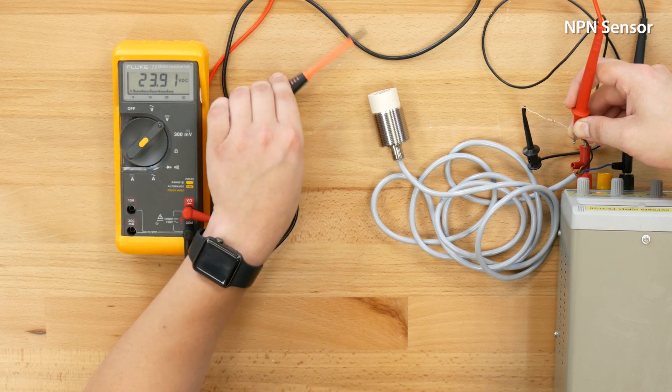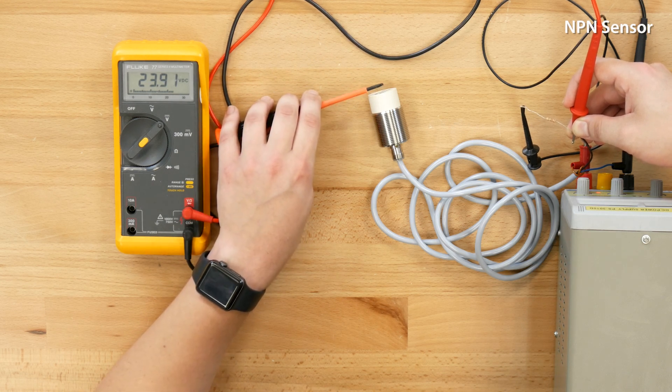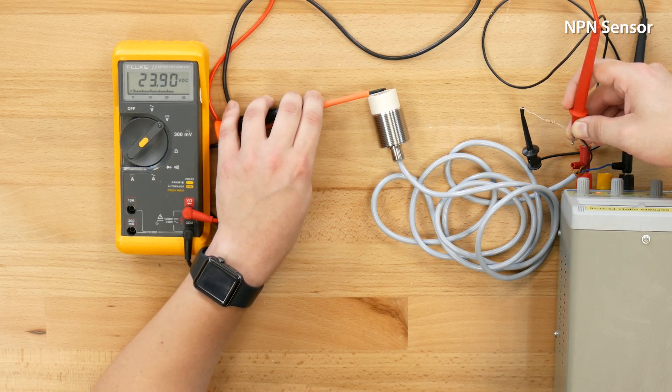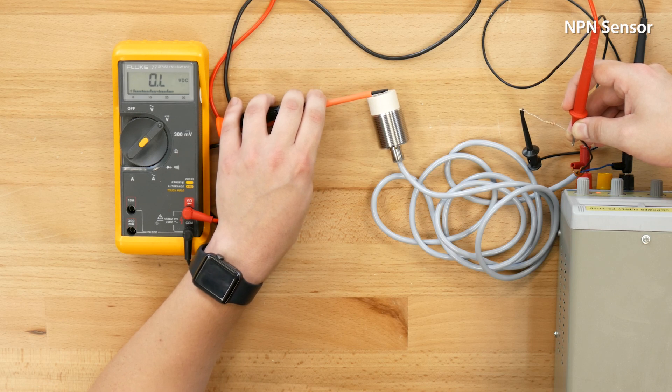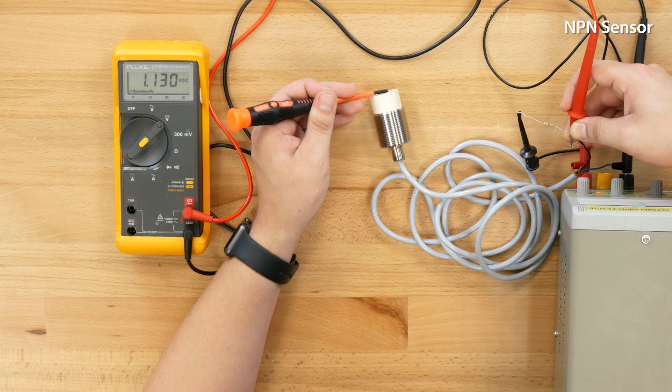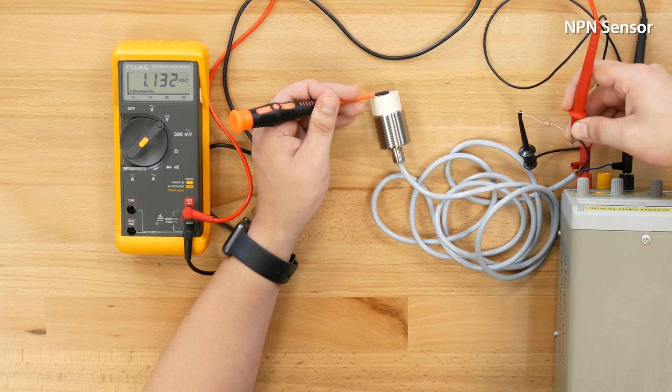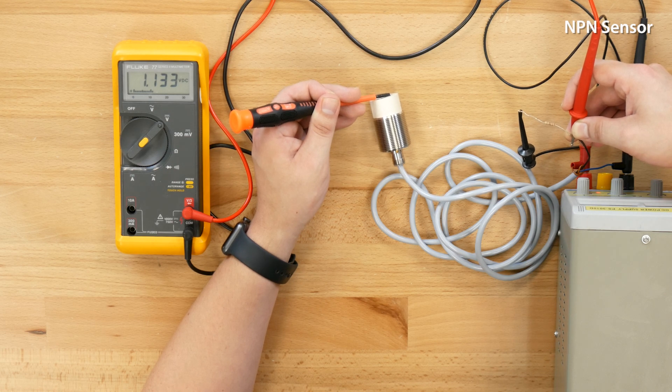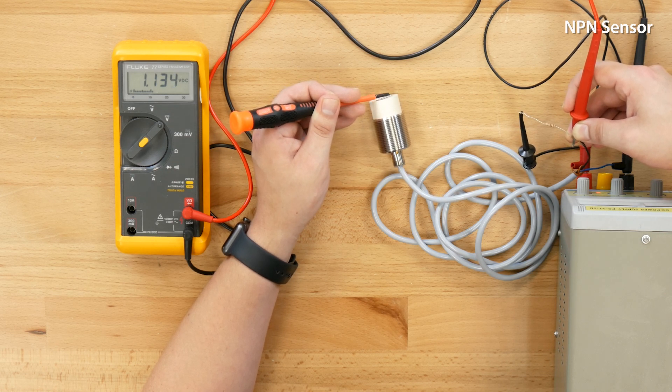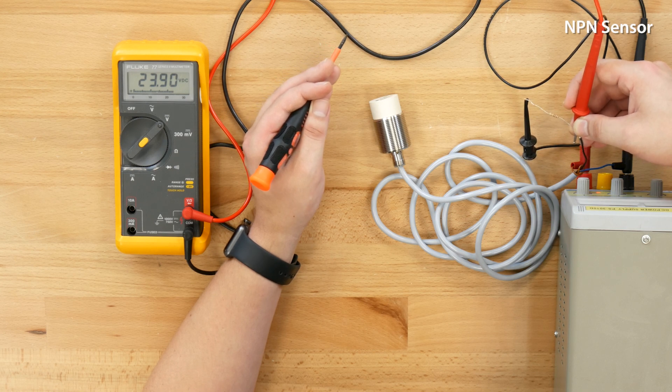We can trigger this using a piece of metal and watch the state change. Okay and there we see that it drops down to the low state in this case about one volt. It is going to be between this and zero volts and we can remove the trigger and see it jump back up to the positive 24 volts here.